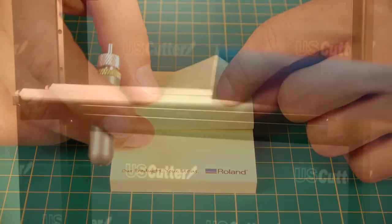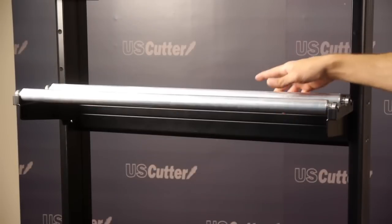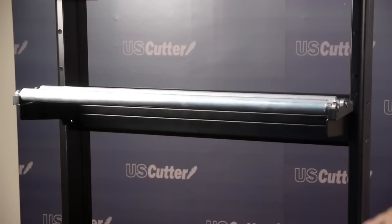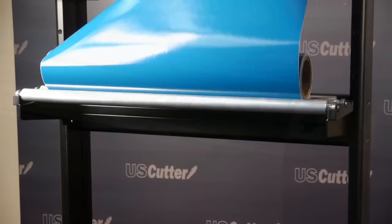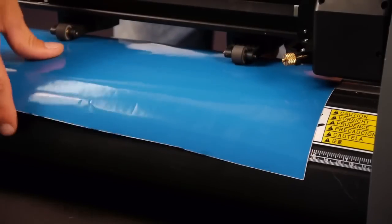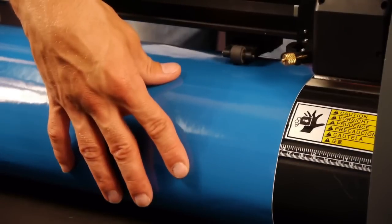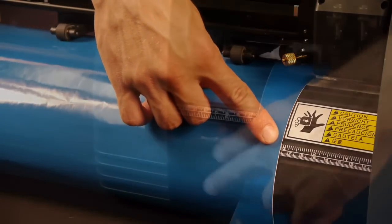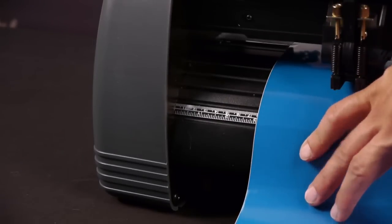Our last step is loading your material. Place some vinyl on the material roller bars, then load it into the back of the cutter. To ensure you're loading the material squarely, use the ruler lines in the front and the back of the machine. Line up the edge of the material with the corresponding mark, first in the front, then in the back.